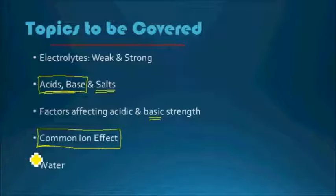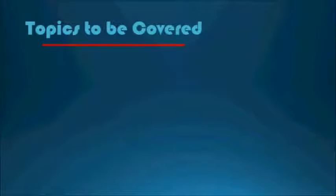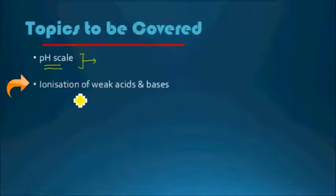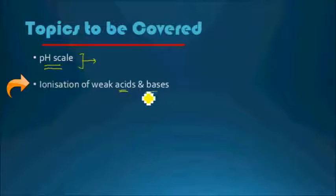Once we get an understanding of those five topics, we will go into a more rigorous analysis of ionic equilibrium, starting with the pH scale — how pH is defined, what a pH scale is, and what it is used for. Then we will understand the ionization of weak acids and bases, how acids and bases dissociate. We will also look at strong acids and bases, though weak acids and bases will be our main focus from an examination perspective.